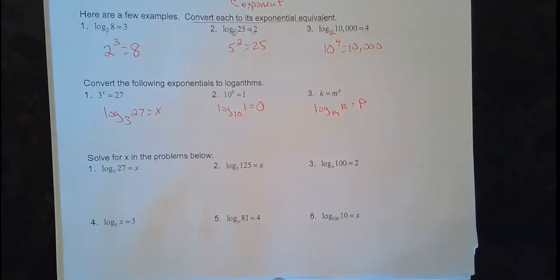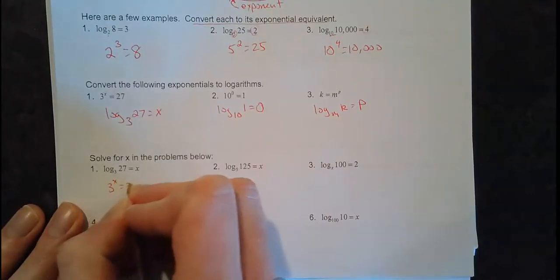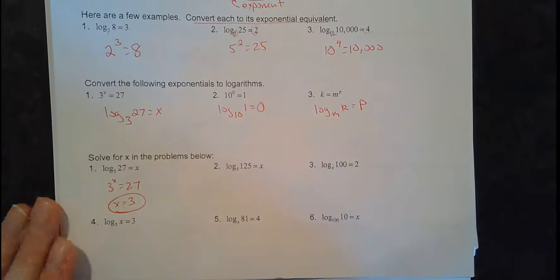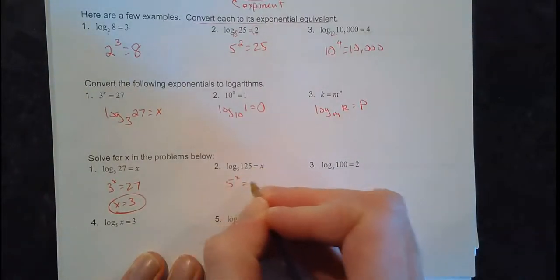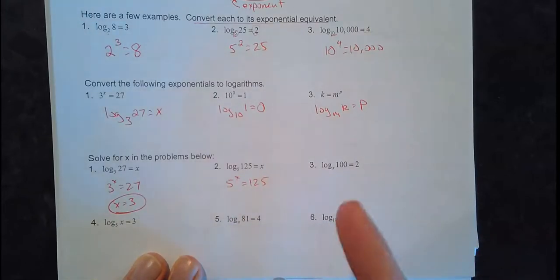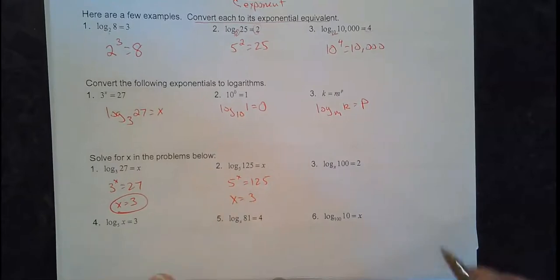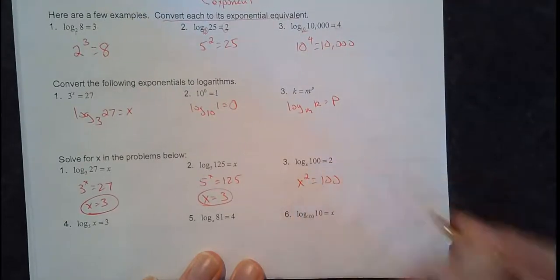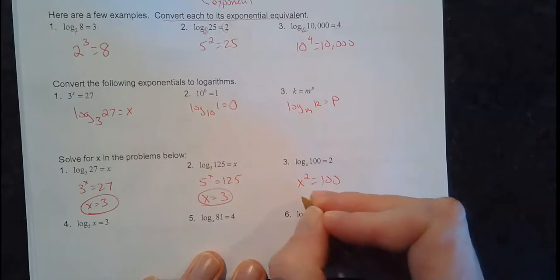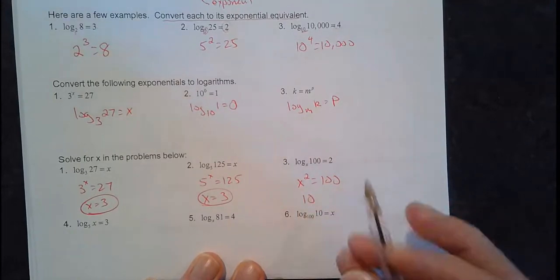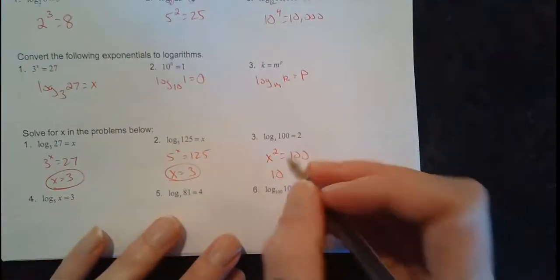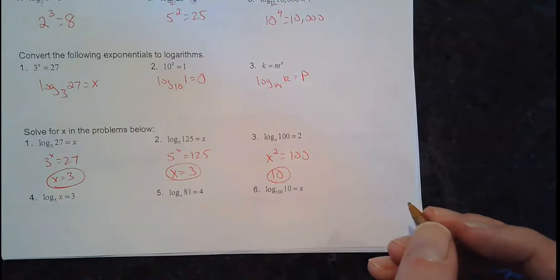Now we're going to start solving these. When they say log base 3 of 27 equals x, that's a fancy way of saying 3 to the what power equals 27. We know 3 times 3 times 3 is the third power, so x equals 3. Here, 5 to the what power equals 125? 5 times 5 times 5 - x equals 3. This says what to the second power equals 100. It could be plus or minus 10, but since the base must be greater than 0, we just say 10.